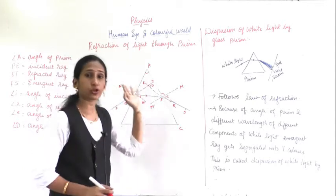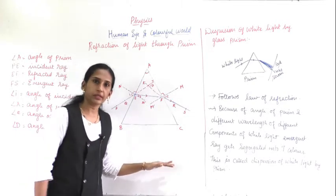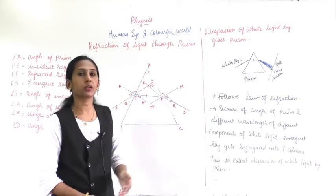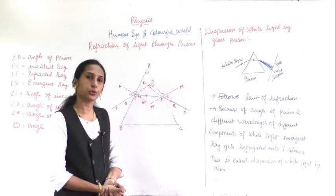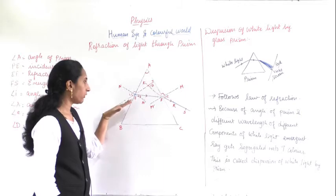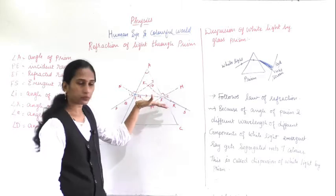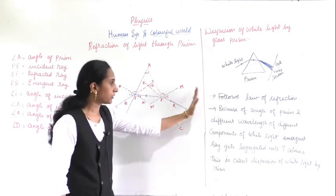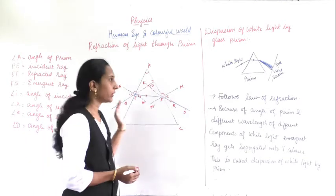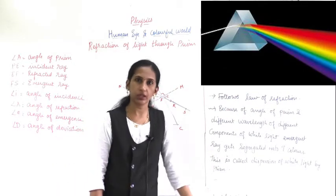This is the basic concept of refraction of light through a prism, which you all should understand. Now, on this basis, we are going to study the dispersion of light through a prism. Instead of a single ray, if I take white light and pass it through the prism, it falls on the screen and you can see the splitting of white light into seven different colors.